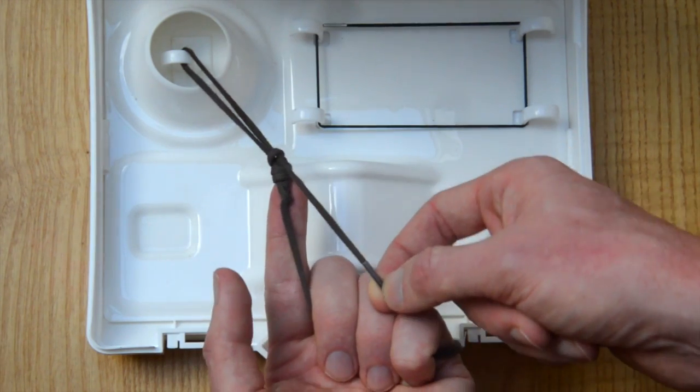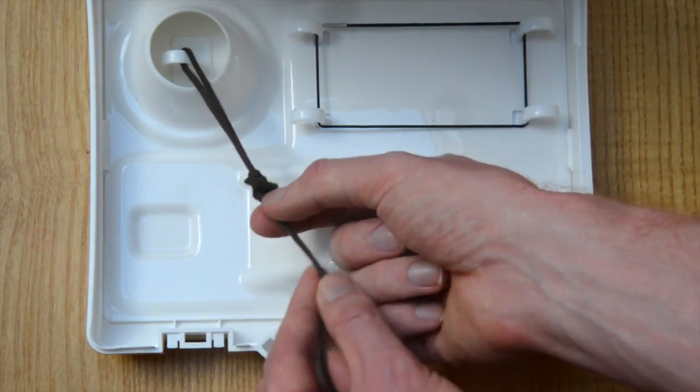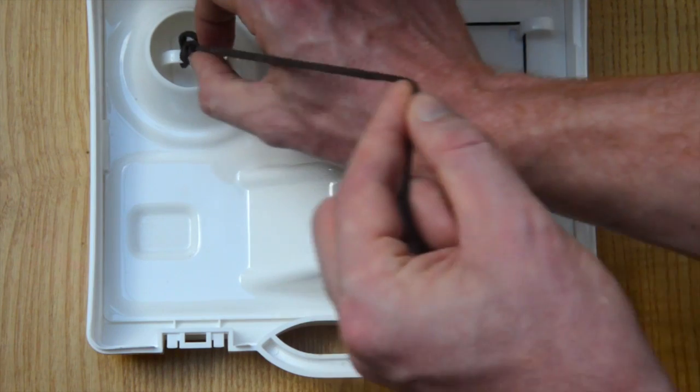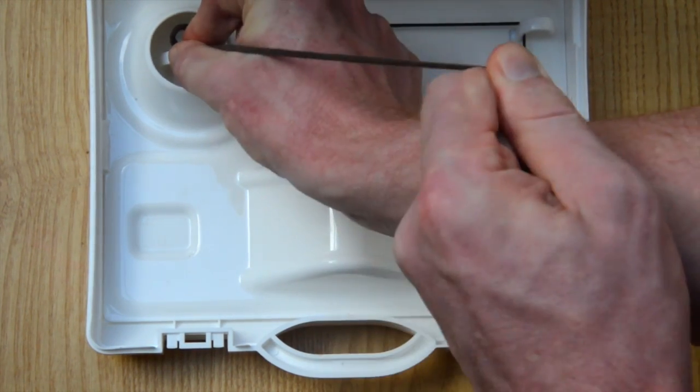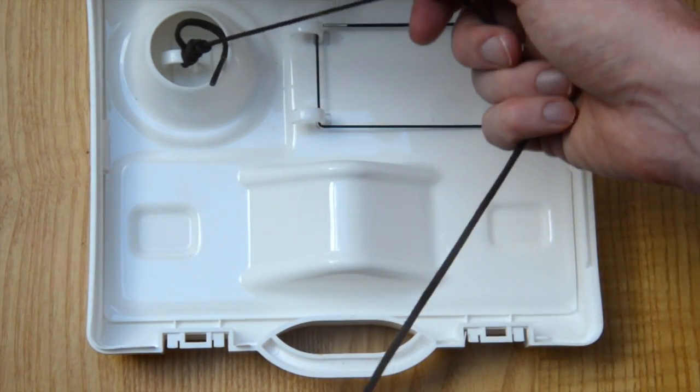At this point, snug the knot down and then using a knot pusher, in this case my fingers, you can tie an extracorporeal knot.